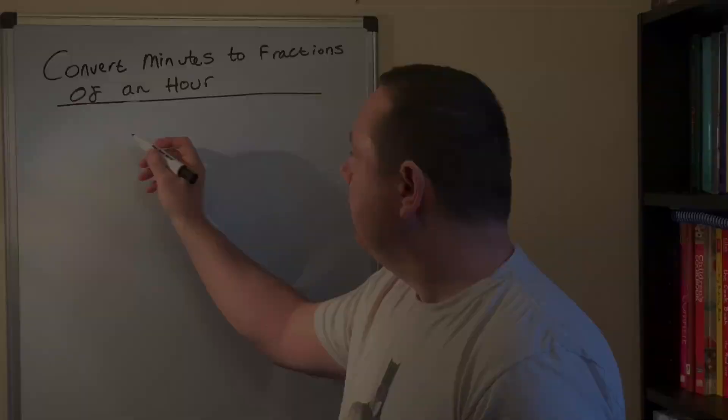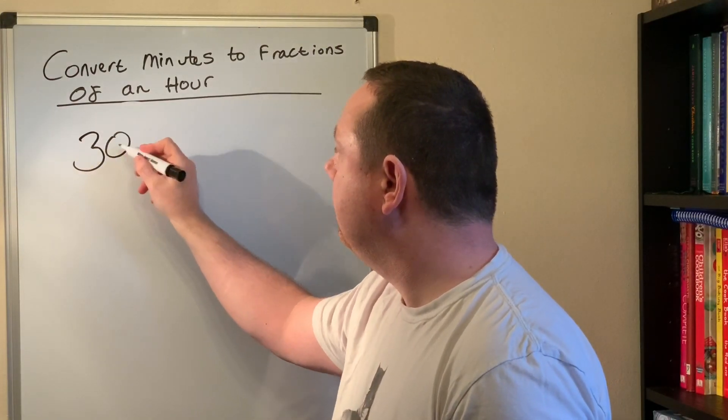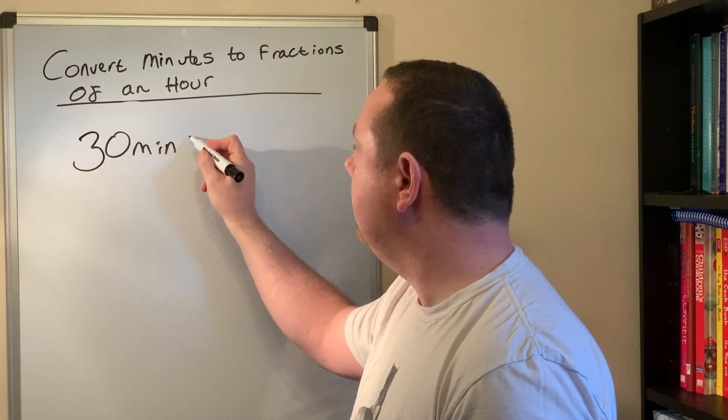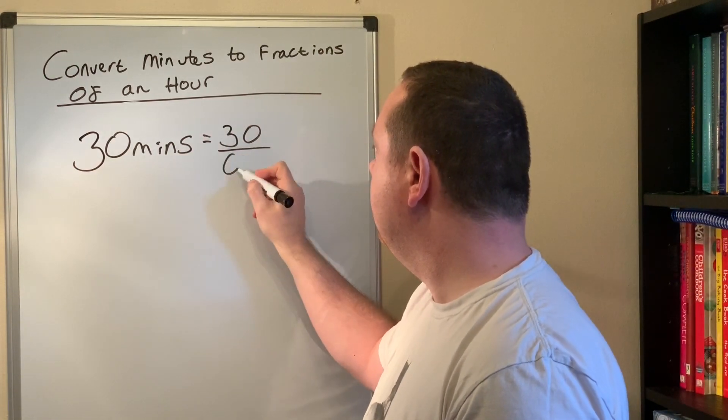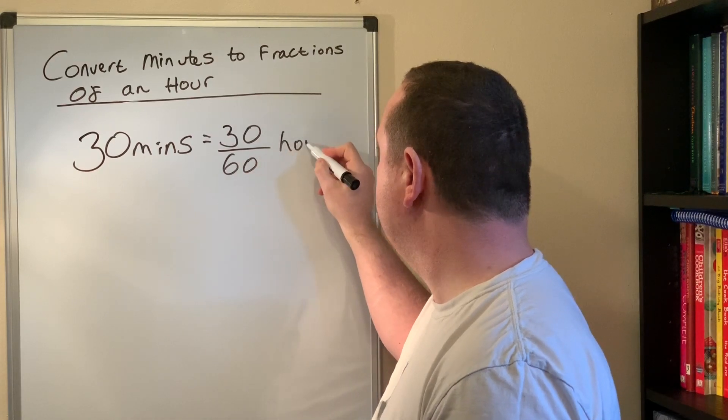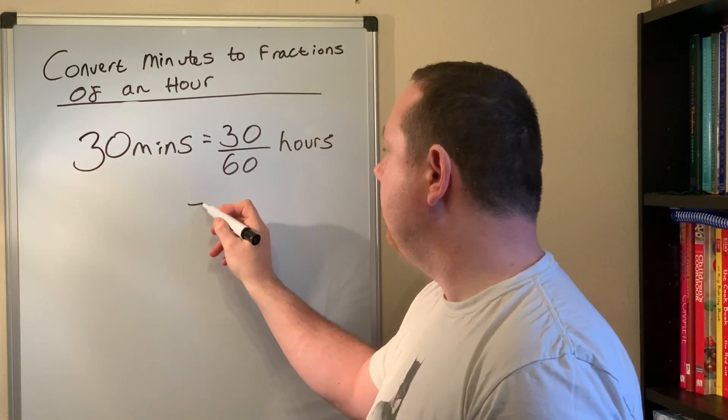Let's do another simple example. Classic one, 30 minutes, we all know that's half an hour, but if we didn't it would be 30 out of 60 hours, simplifying that 30 out of 60 is a half hour or 0.5.